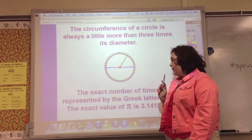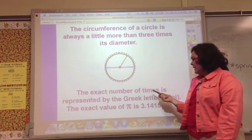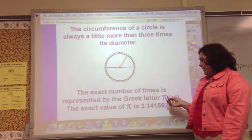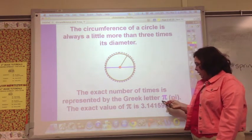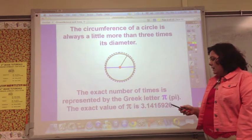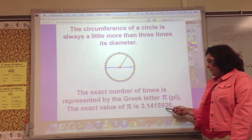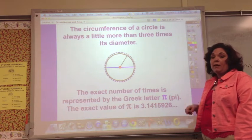The exact number of times around is represented by the Greek letter pi. The exact value of pi is 3.1415926 and it keeps going and going and going.